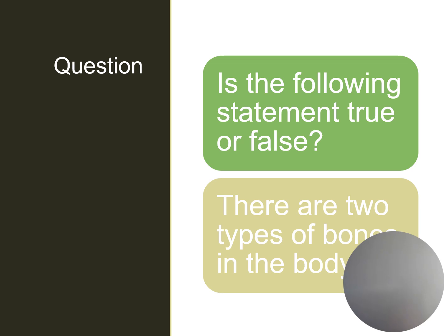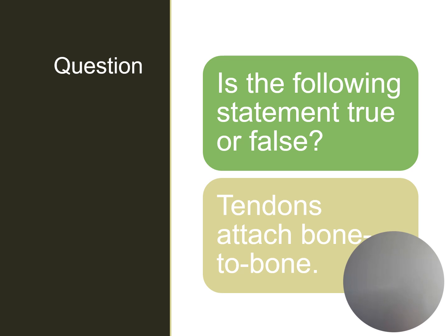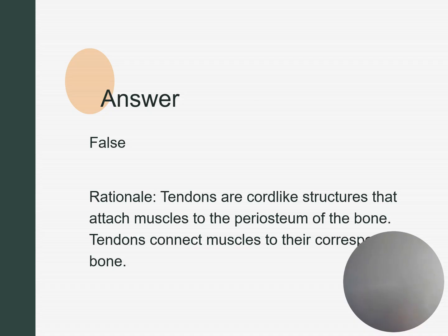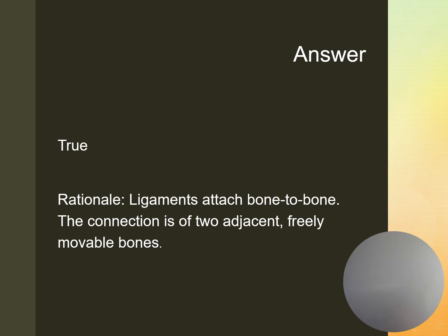True or false: There are two types of bones in the body. This is false. True or false: Tendons attach bone to bone. Again, this is false. True or false: Ligaments attach bone to bone. This one is true.